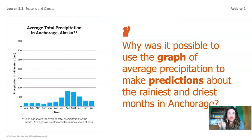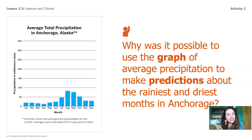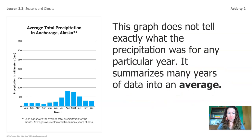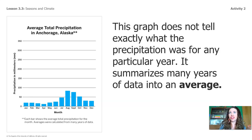Why was it possible to use this graph to make predictions about the rainiest and driest months in Anchorage? Did you notice at the bottom of this graph there are some words? It says: each bar shows the average total precipitation for the month, and averages were calculated from many years of data. So this graph was not taken from just one year of data — it was taken from many years. The average was taken from a bunch of different years, and that's how they came up with these numbers. So these numbers are pretty reliable, which means we can trust them to use to make predictions.